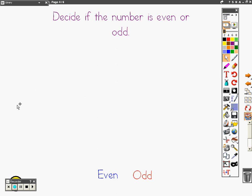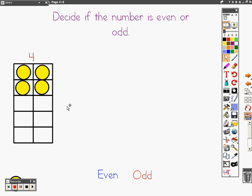Let's take a look at these numbers and decide if they are even or odd. The number four. Since each one has a partner, the number is even.